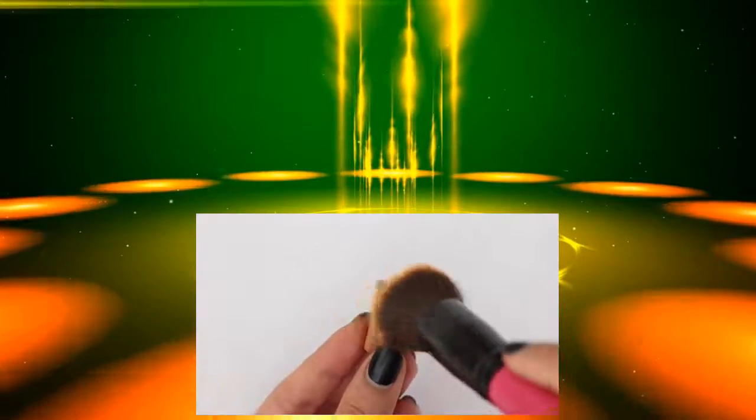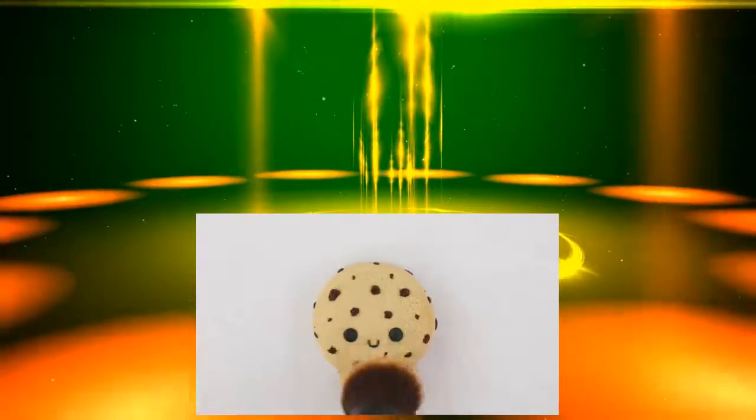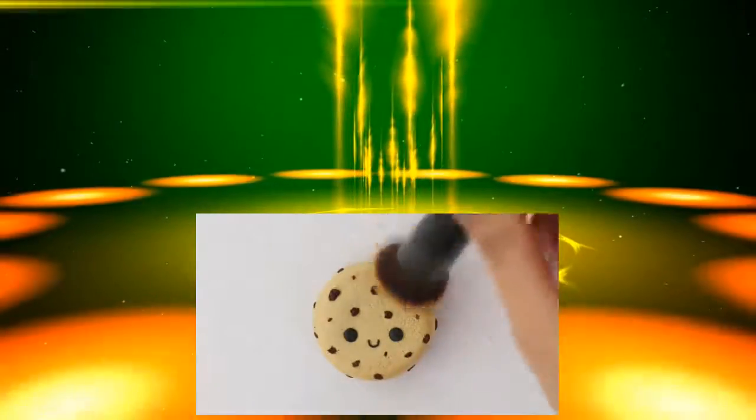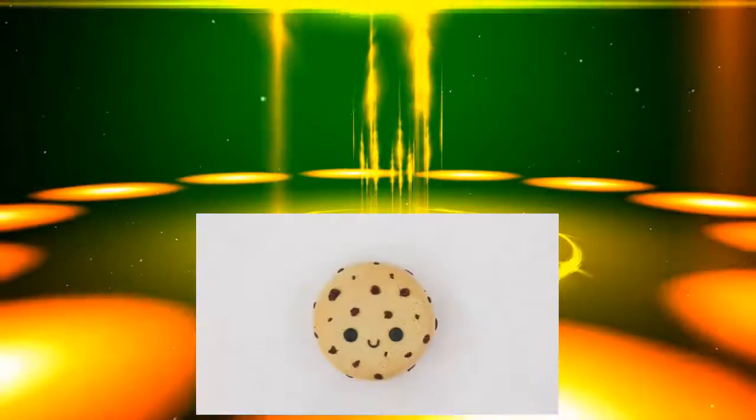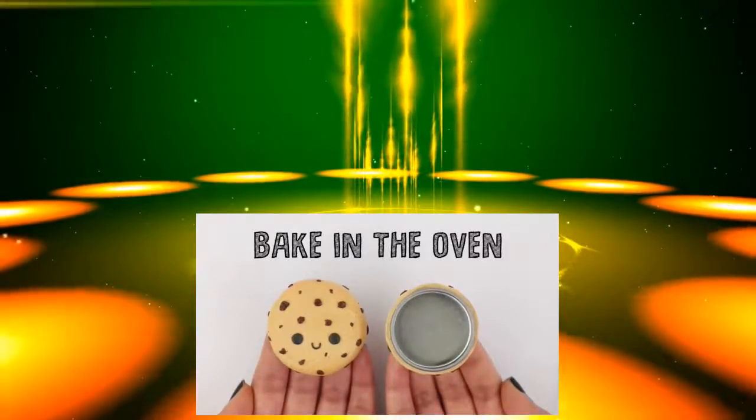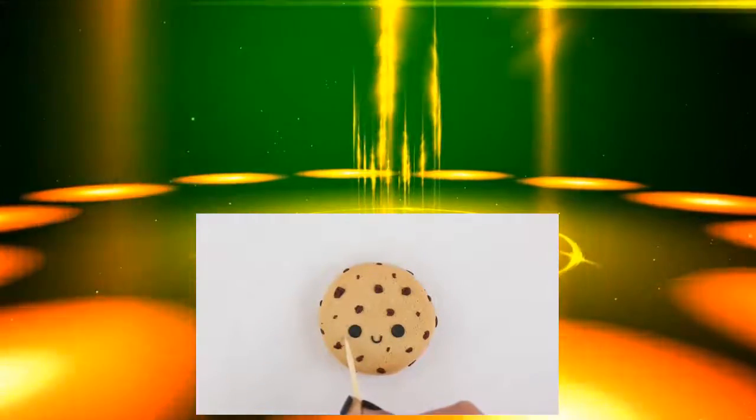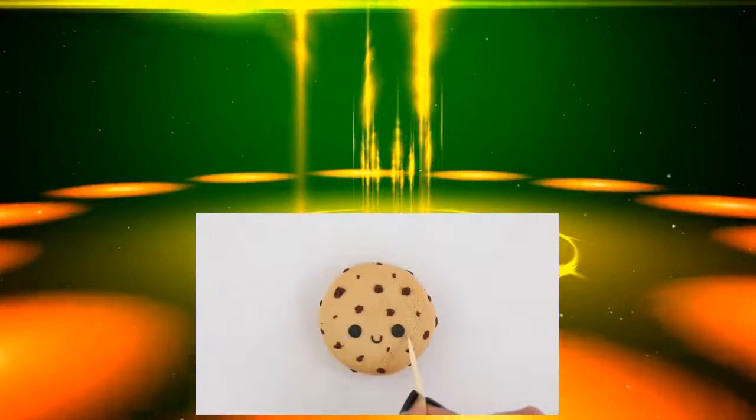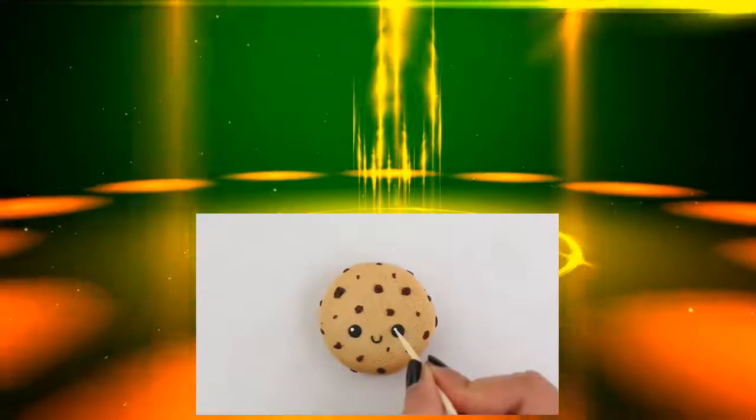Using some brown chalk pastel, I'm going to shade the cookie and this is going to give it that baked look. Now you want to let that bake in the oven for 20 to 25 minutes. I'm going in with some acrylic paint and I'm adding on the final details, so I added the little dots inside the eyes and I also added the blush.